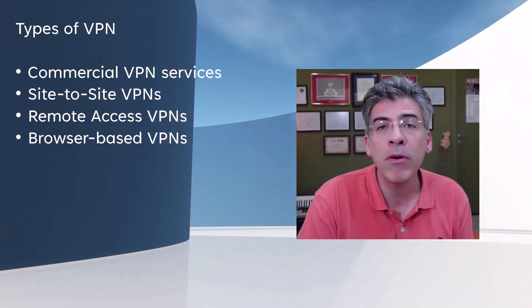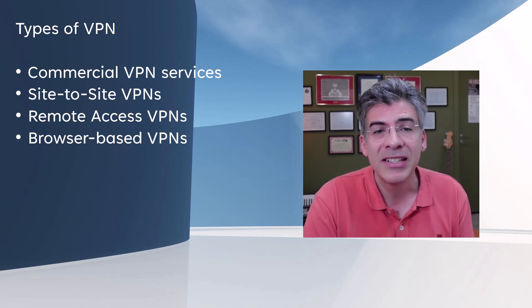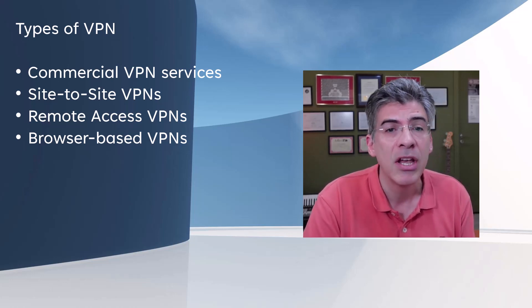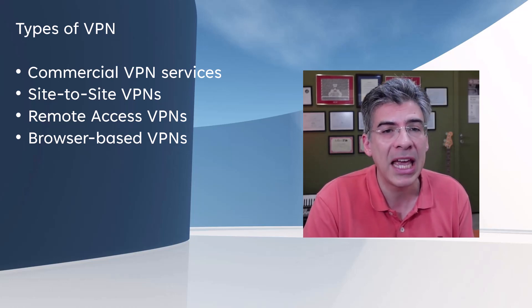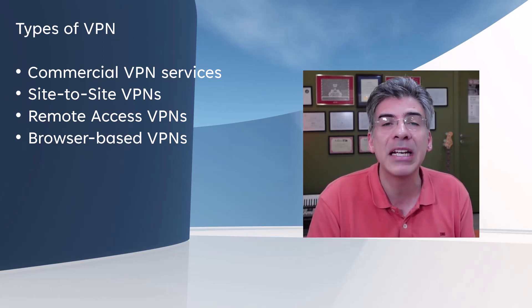As a result, confidentiality is maintained. So what are the different types of VPNs? What determines what type of VPN you're really using depends on what devices are actually functioning as the VPN endpoints. There are four fundamental types of VPNs in this sense: commercial VPN services, site-to-site VPNs, remote access VPNs, and browser-based VPNs, which is actually a special case. Each of these serves a slightly different purpose, and we'll examine each one briefly.